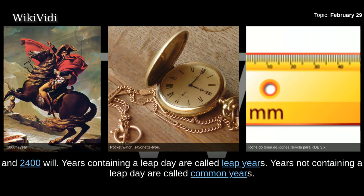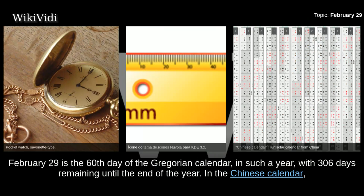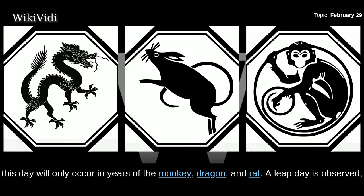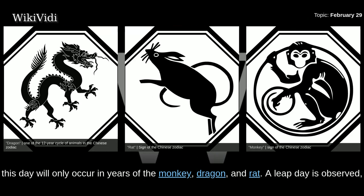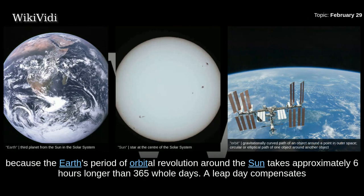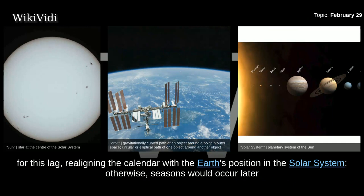February 29th is the 60th day of the Gregorian calendar in such a year, with 306 days remaining until the end of the year. In the Chinese calendar, this day will only occur in years of the monkey, dragon, and rat. A Leap Day is observed because the Earth's period of orbital revolution around the sun takes approximately 6 hours longer than 365 whole days, and a Leap Day compensates for this lag, realigning the calendar with the Earth's position in the solar system.